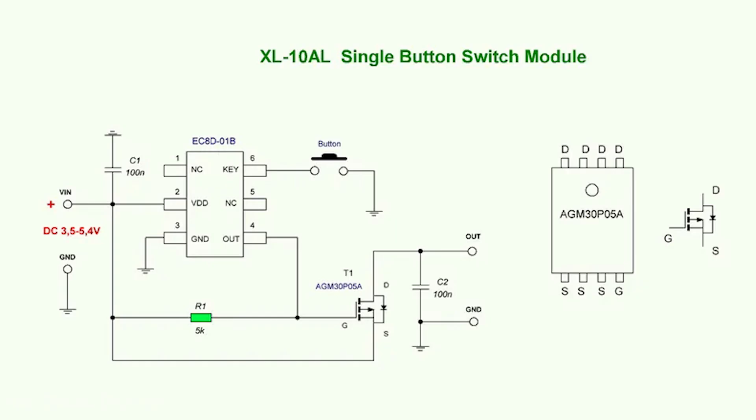The scheme is quite simple. When the button is pressed, the output of the microcircuit opens and current flows to the gate of the transistor. The transistor opens and through it the load is powered from the power source.